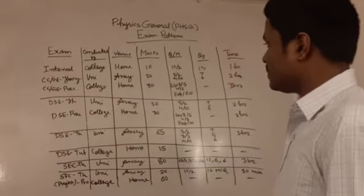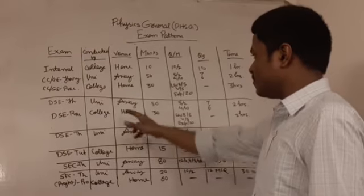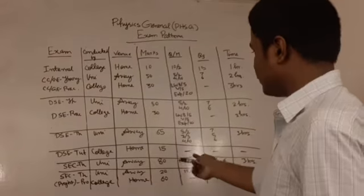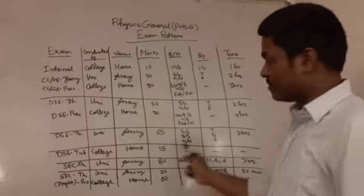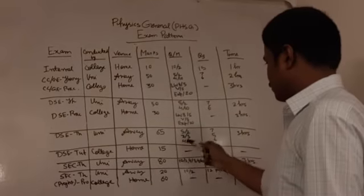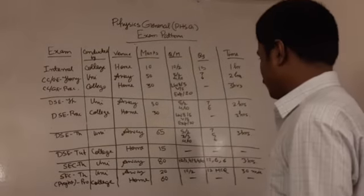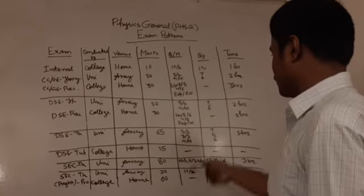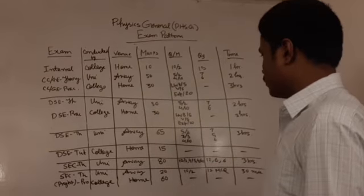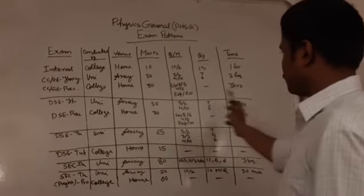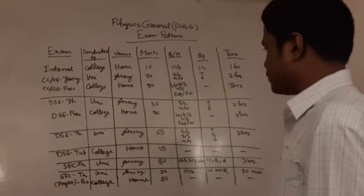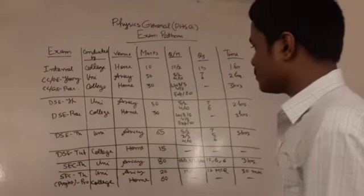Then you have the DSC theory exam, which is different from the first one. It is also conducted by the university, but it has a total weightage of sixty-five marks. You have five questions to attempt out of seven of two marks each, three questions out of five of five marks each, and four questions to attempt out of six of ten marks each. The total time is three hours, unlike the first theory exam which is two hours.